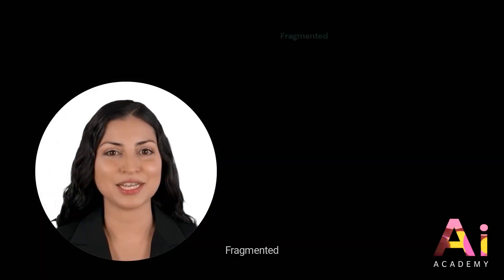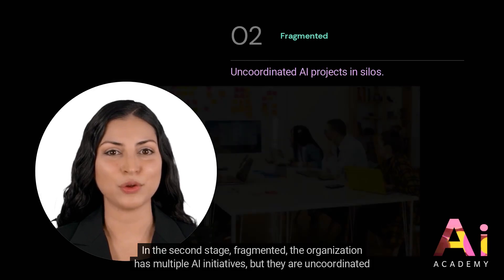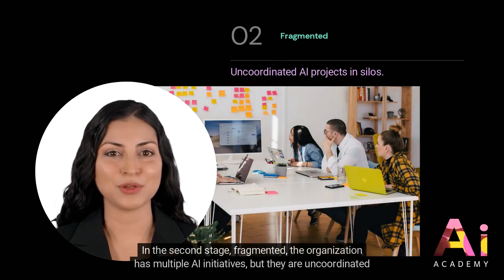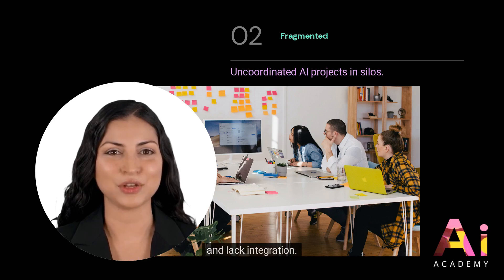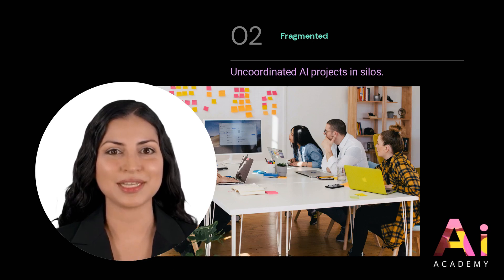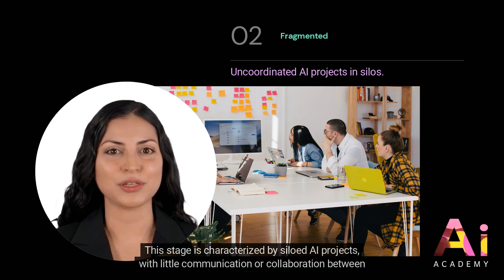In the second stage, fragmented, the organization has multiple AI initiatives, but they are uncoordinated and lack integration. This stage is characterized by siloed AI projects with little communication or collaboration between teams.